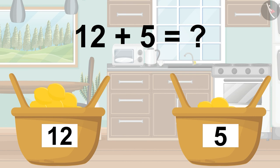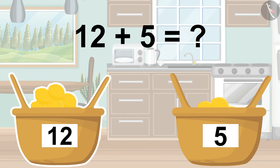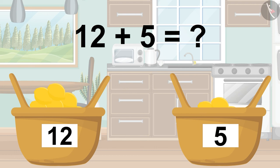Now children, it's your turn to add two-digit numbers. Gaffee's mother is making lemon pickle. In one basket she has 12 lemons, and in the other she has 5. How many lemons does she have in total to make the pickle? Find the answer and share it with your friends and family.